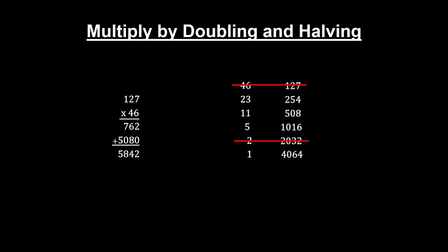Now scratch out each row that has an even number in the first column, and add the remaining numbers in the second column. This is the product.